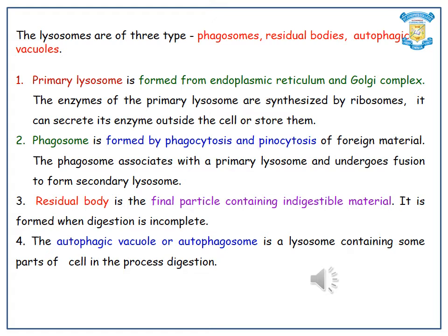The enzymes of the primary lysosomes are synthesized by ribosomes. It can secrete its enzymes outside the cell or store them. The phagosome is formed by phagocytosis and pinocytosis of foreign material. The phagosome associates with a primary lysosome and undergoes fusion to form secondary lysosomes. The residual body is the final particle containing indigestible material, formed when digestion is incomplete.